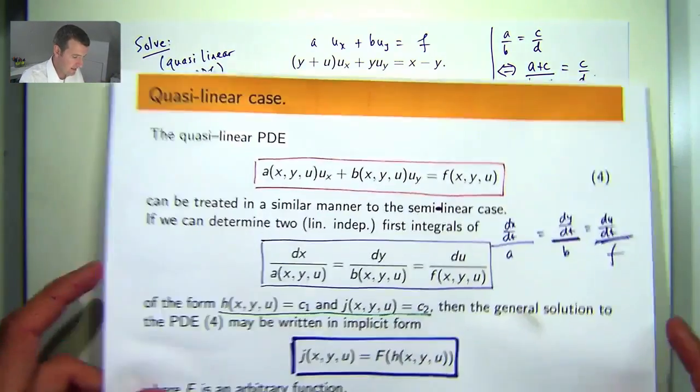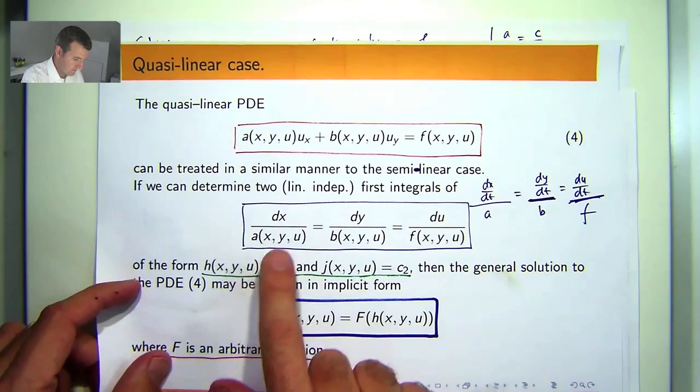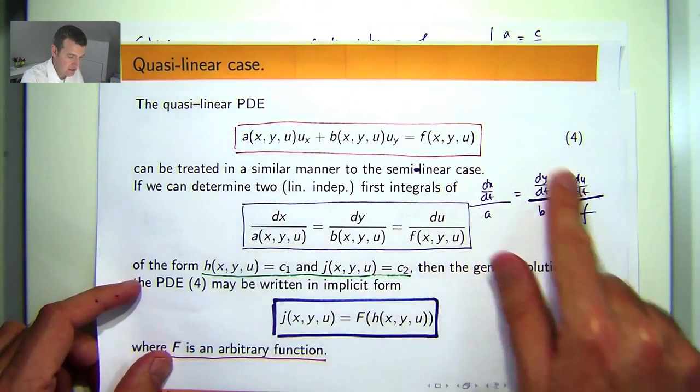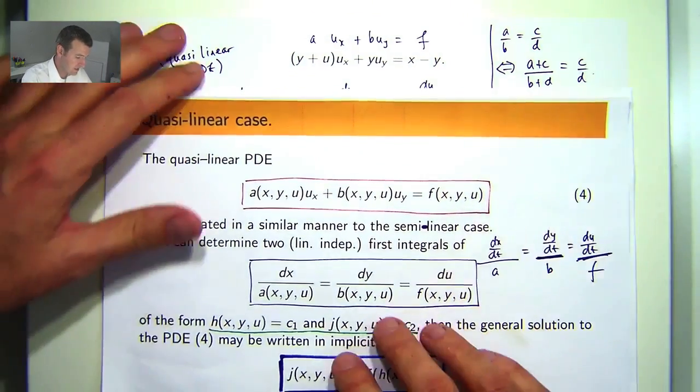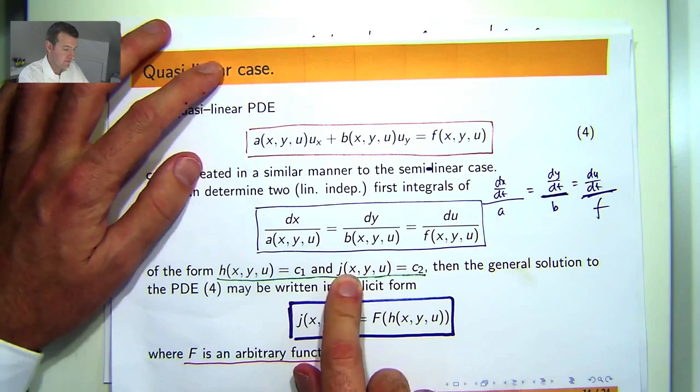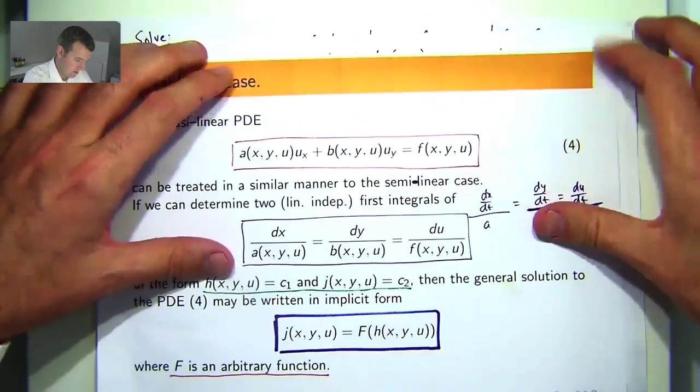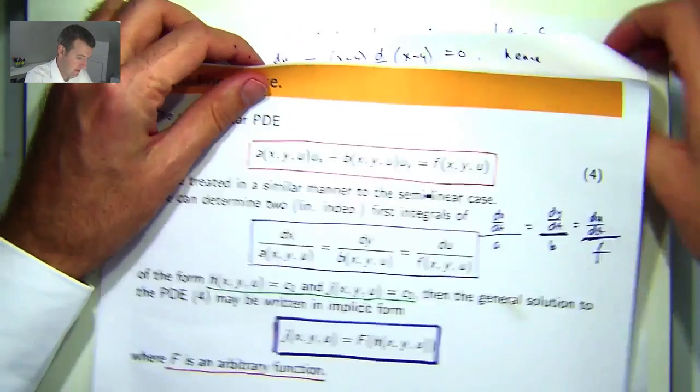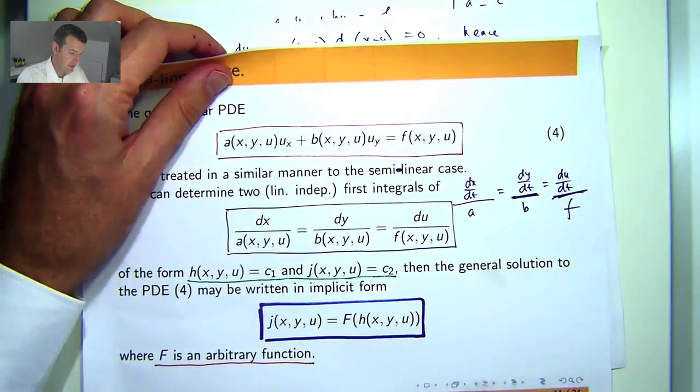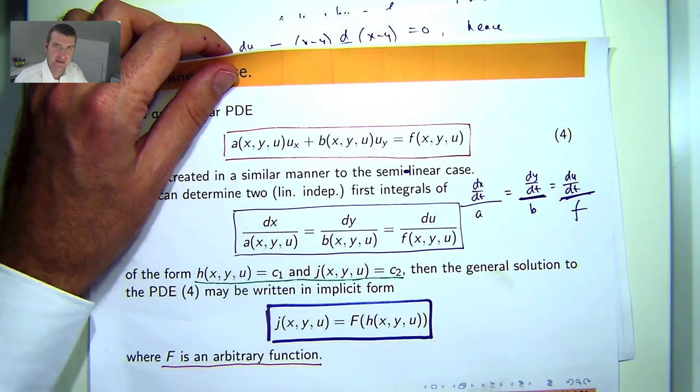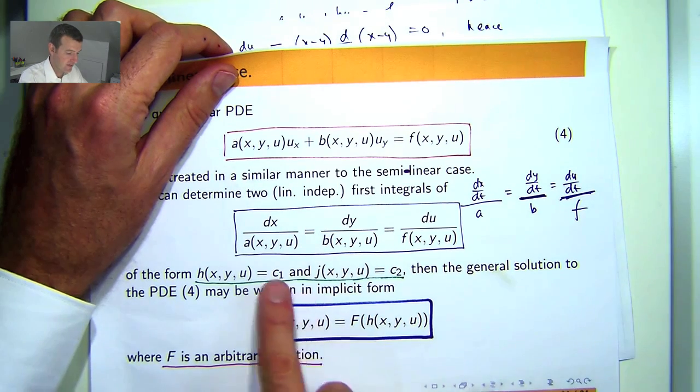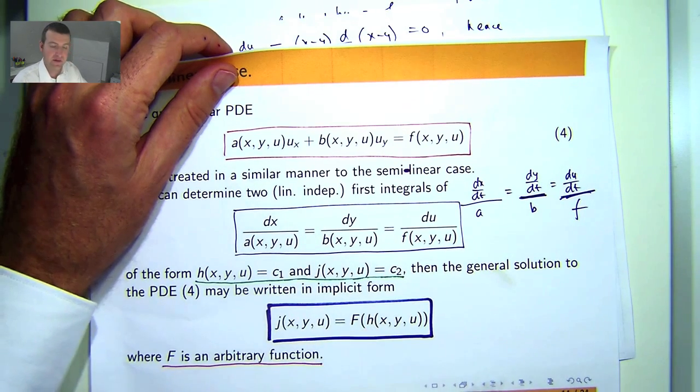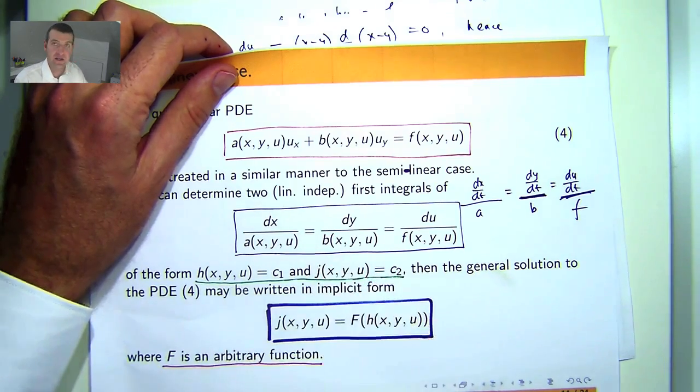So, let's go back and think about the method again. We manipulated this system just through simple manipulations. Our goal all along was to come up with these h and j by playing with these equations so that you've got the derivative of one function is zero, and the derivative of another function is zero. Then you just integrate and form these constants. Last step, form a functional relationship between these two functions.